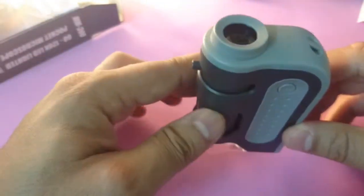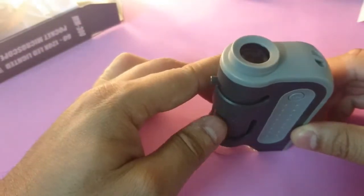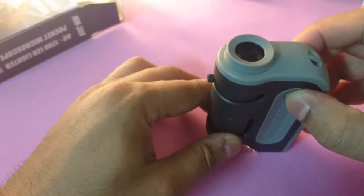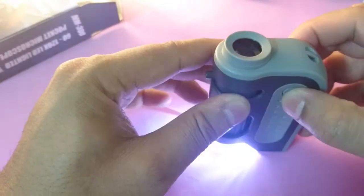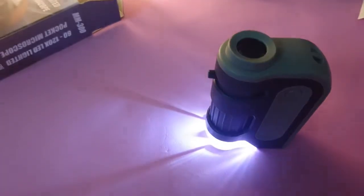For instance I have got a small piece of this onion and you can see here then you zoom it, then you just use the LED light to light it up and I will like to show you how it looks.